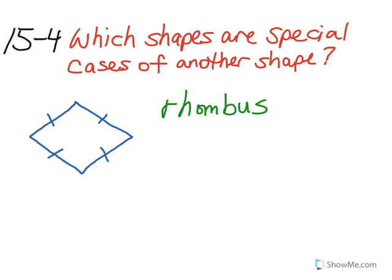Think about its properties to determine other names that could be used. This rhombus can also be considered a parallelogram since it has two pairs of parallel sides.